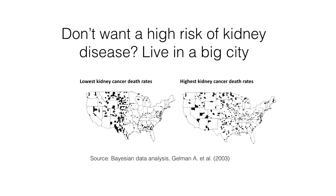A good illustration is Gelman's maps of high and low kidney cancer death rates. These maps are useless — they don't reveal systematic risk levels; they reveal population distribution and where outliers appear due to small sample sizes.